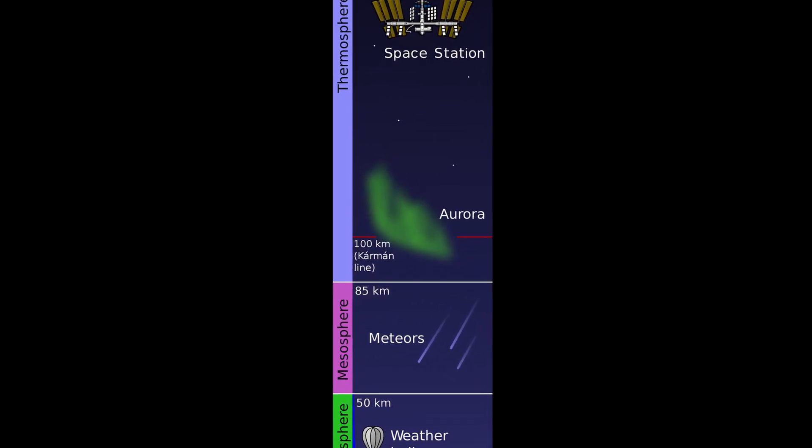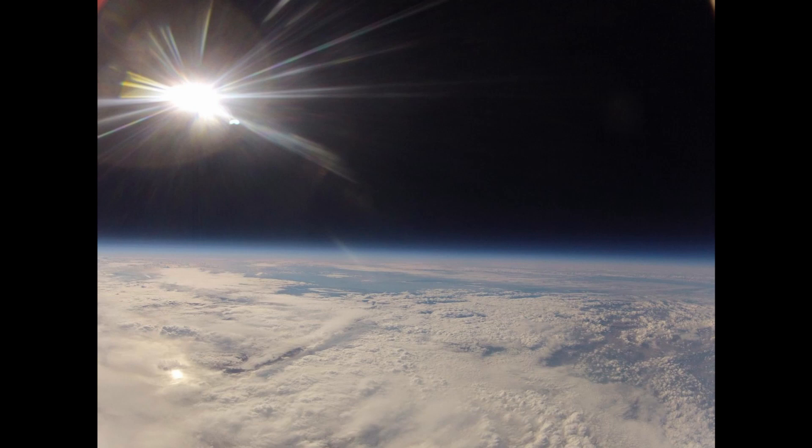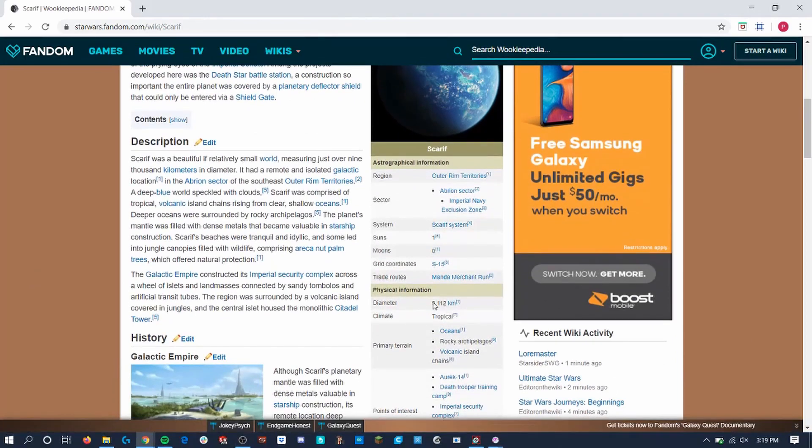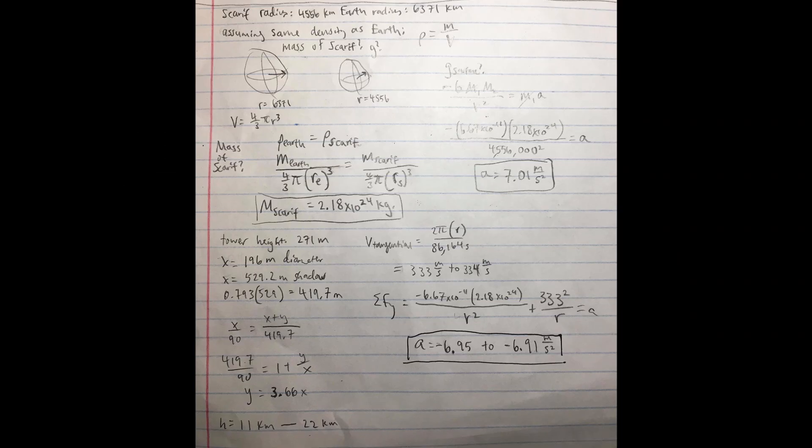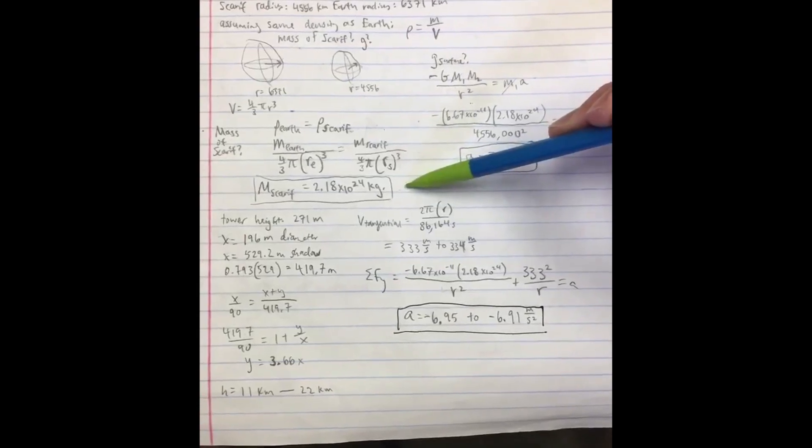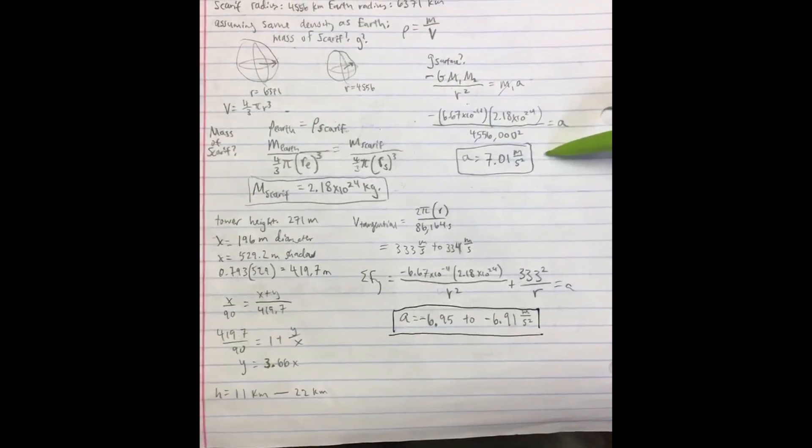But something wasn't adding up. Even the upper bound of the altitude that I calculated was less than half the definitive altitude for space, 100 kilometers. So I did more research online and consulted the Star Wars wiki, where I learned that Scarif's radius was only 3 fourths that of Earth's, so its acceleration due to gravity on the surface would be smaller. I calculated the mass of Scarif, assuming the same density as Earth, and also the acceleration due to gravity, which is equivalent to 7.01 meters per second squared.